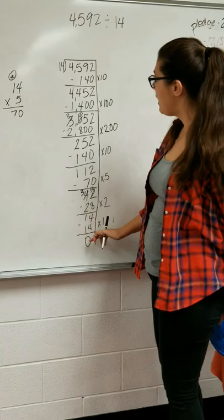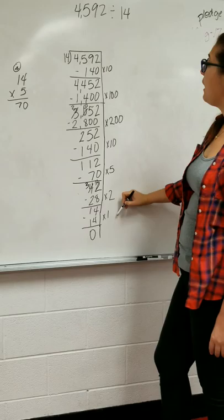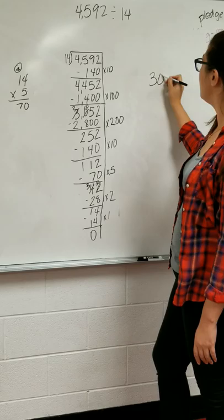Now I'm going to add together all my numbers that I have right here on this side. So I'm going to say 10 plus 100 plus 200 plus 10 plus 5 plus 2 plus 1. I'm going to start with my bigger numbers with my hundreds place. So I'm going to say 100 plus 200 is 300. And check it off because I know that I've done it.